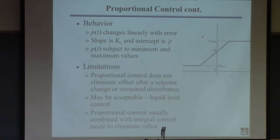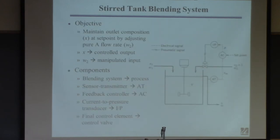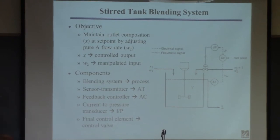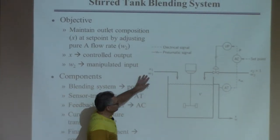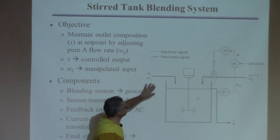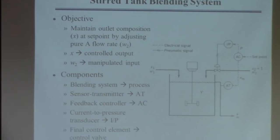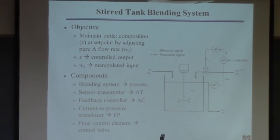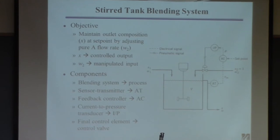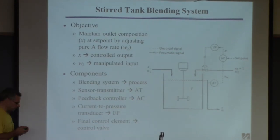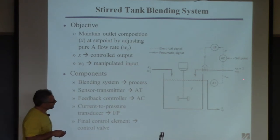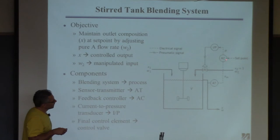We were talking about feedback control, and here was our canonical example. The goal is to mix two streams to get some desired composition. You have one stream you have no control over in terms of its flow and composition, and another stream that's pure component A. We measure the composition of the outlet stream, send that information to a controller, and compare that measurement to the desired value of the composition — the set point.